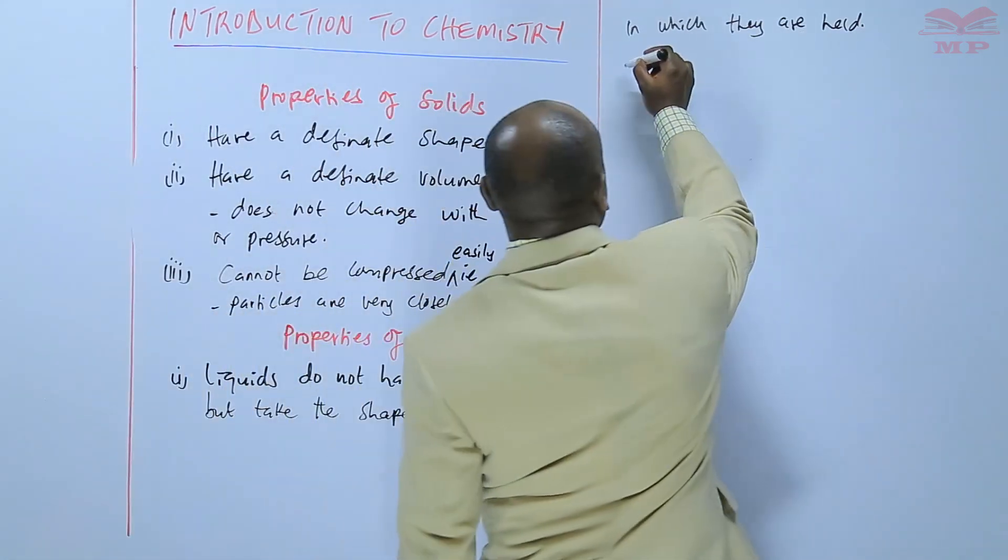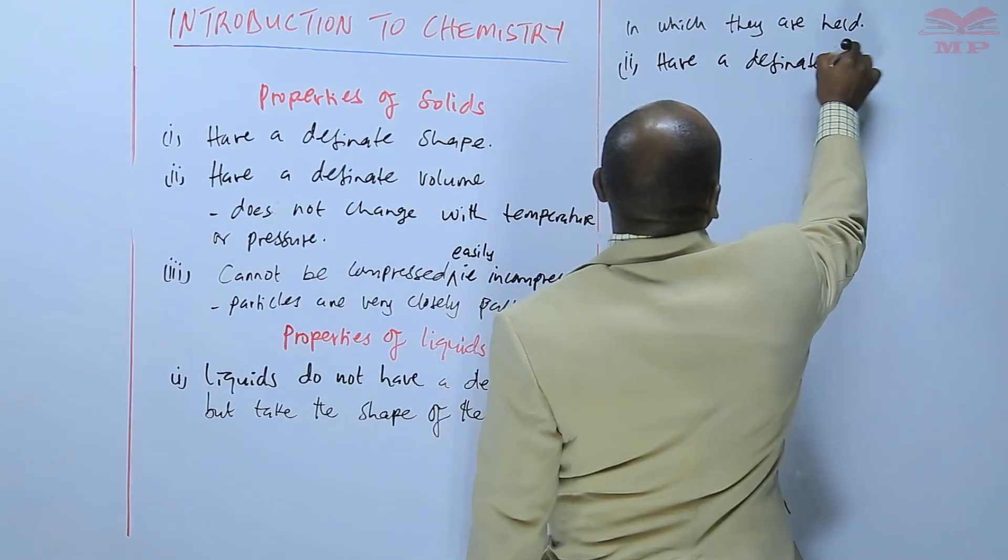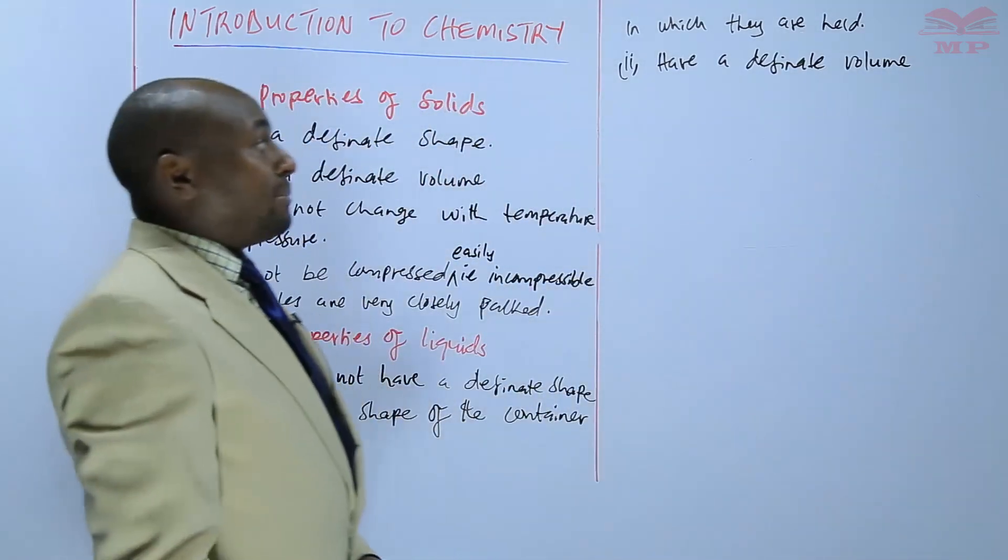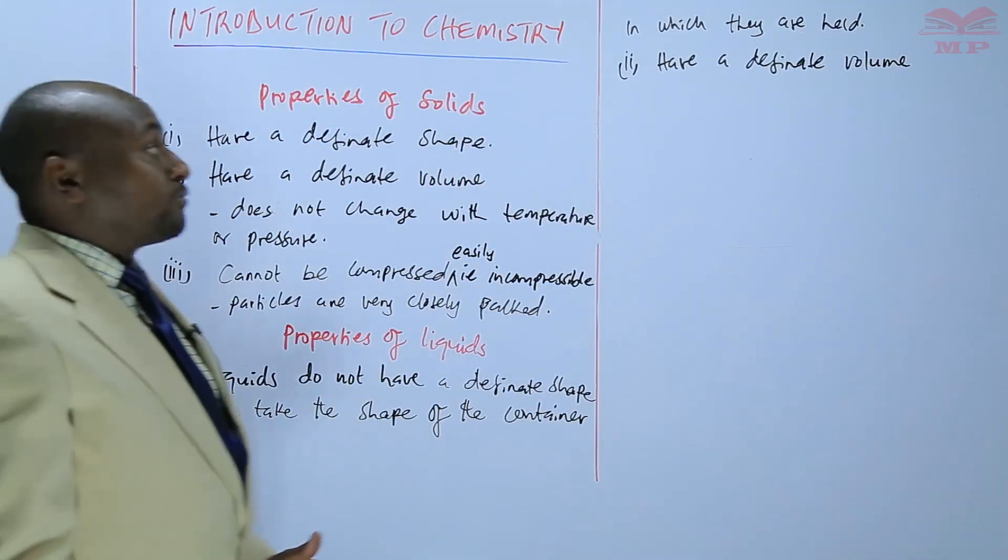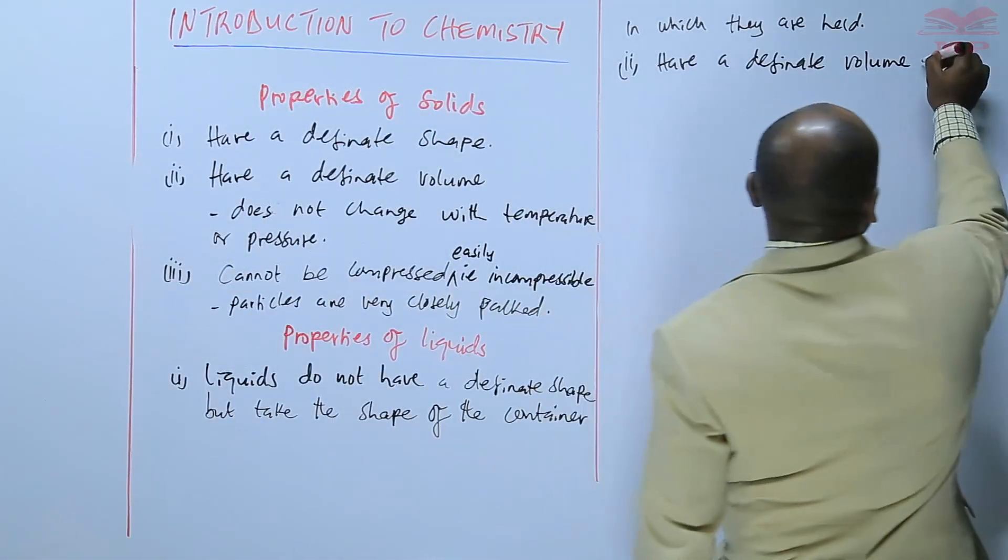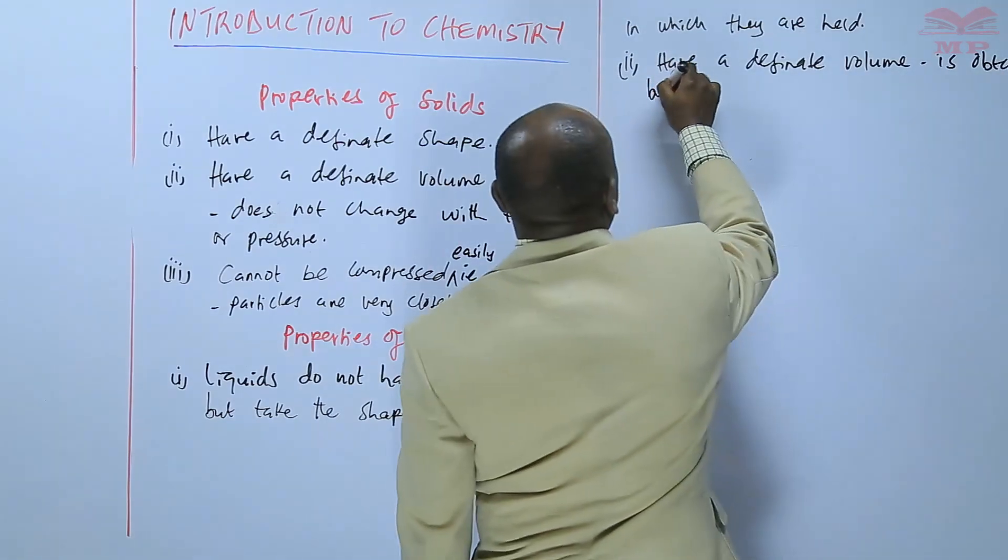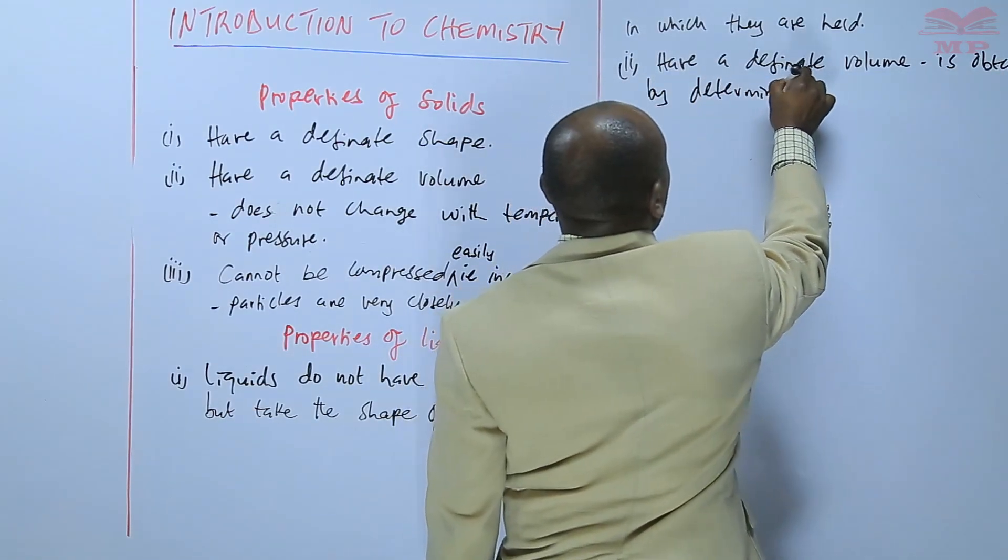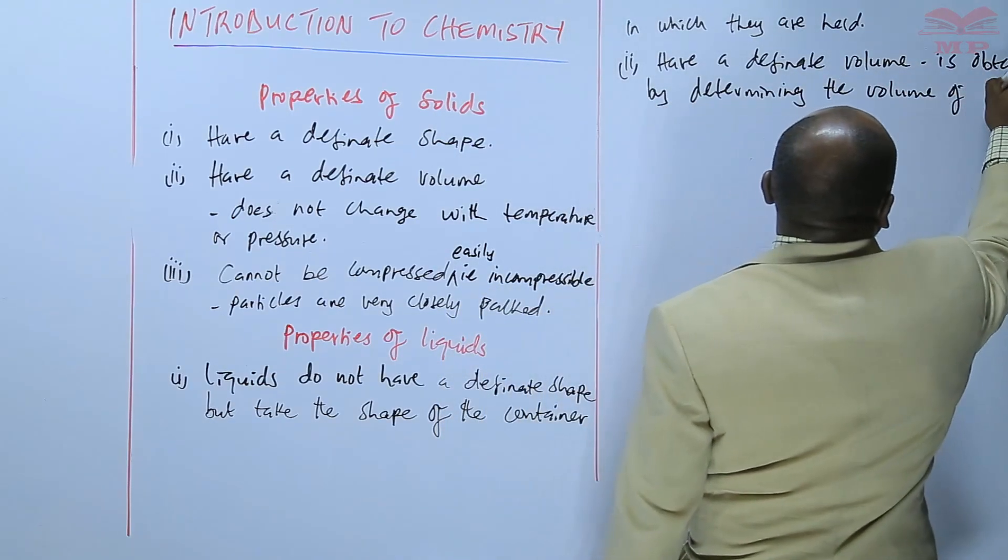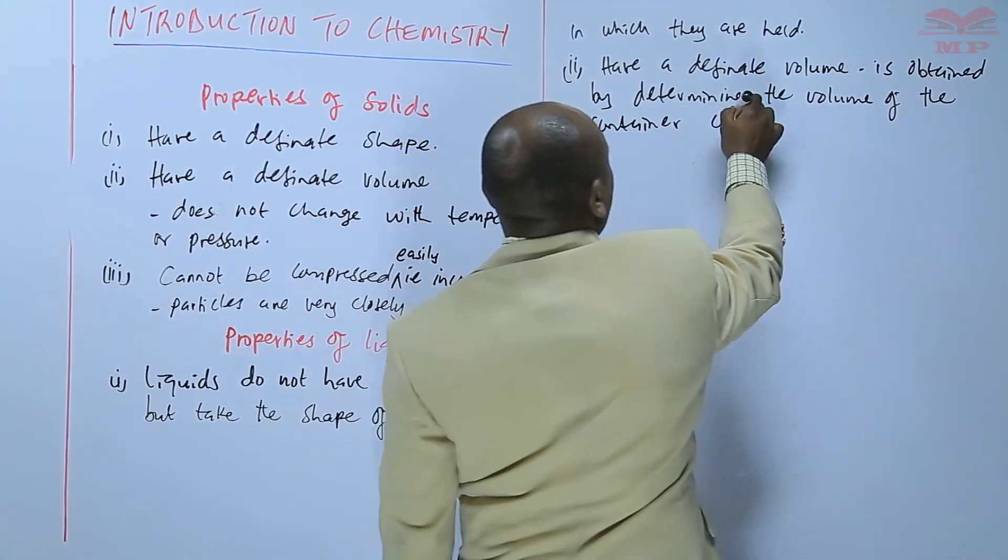Liquids have a definite volume. And the volume is determined by determining the volume of the container that contains that liquid. So this one is obtained by determining the volume of the container containing the liquid.